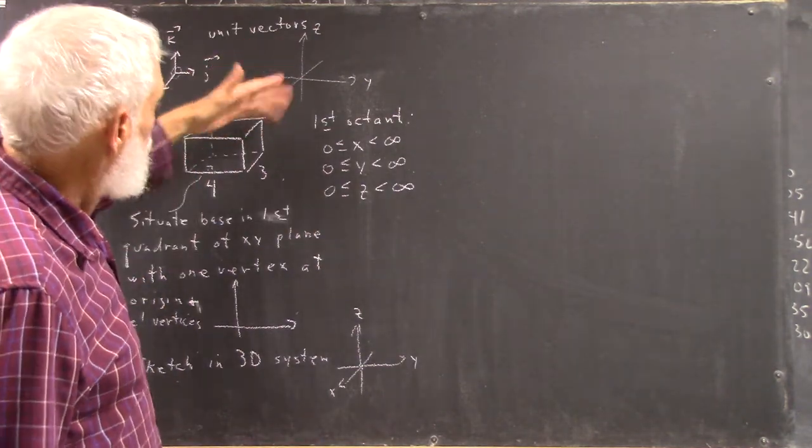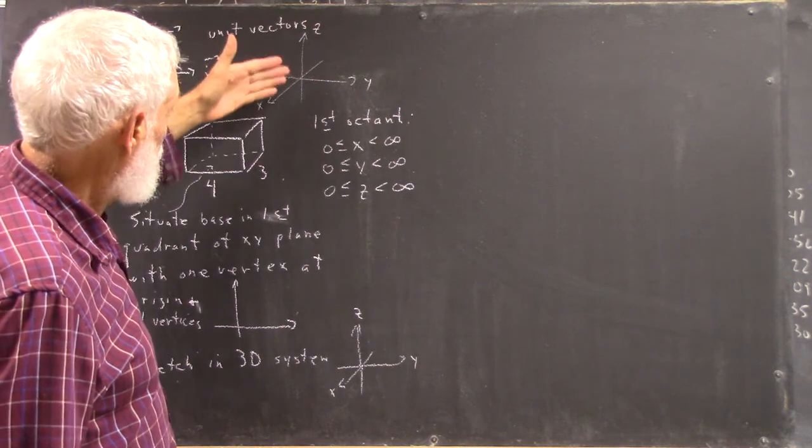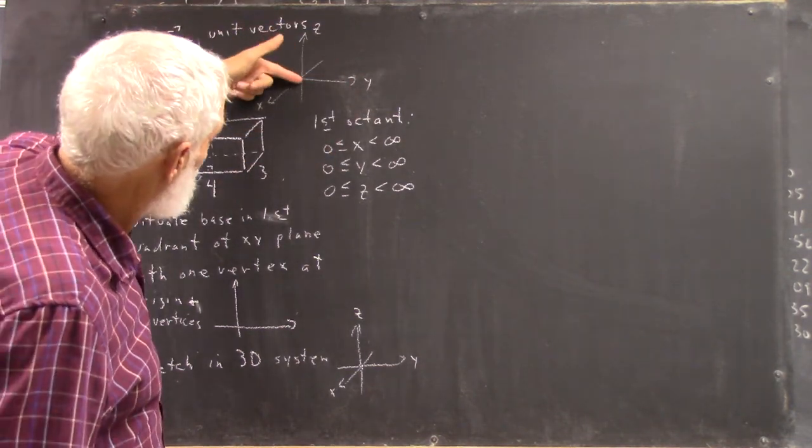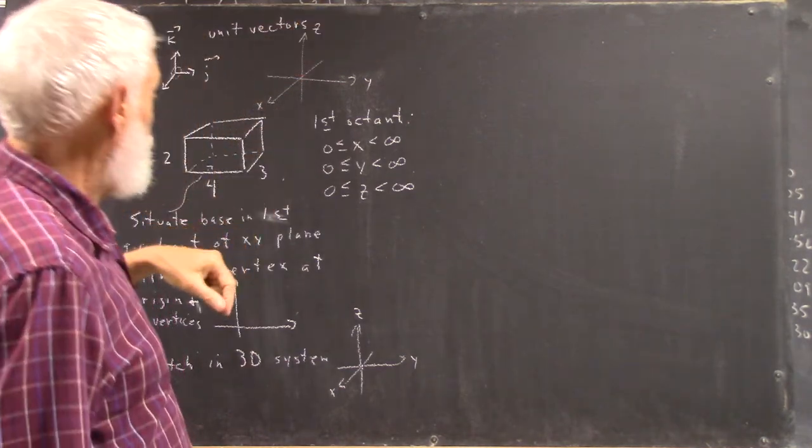The first octant is the part above the x, y plane where both x and y are positive. It's kind of from here on out in this direction.